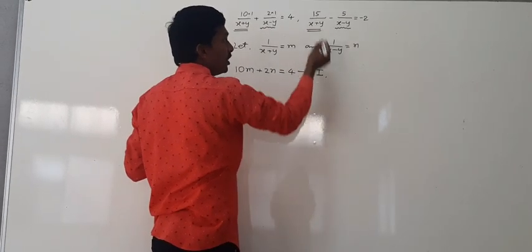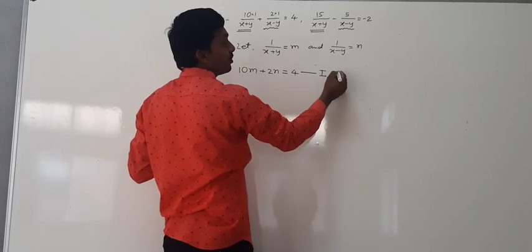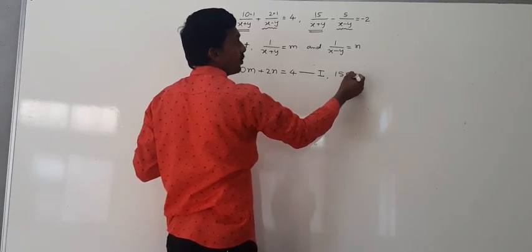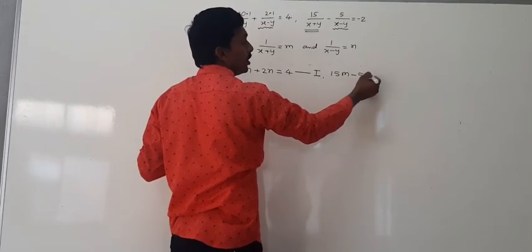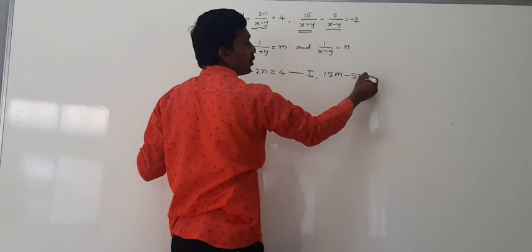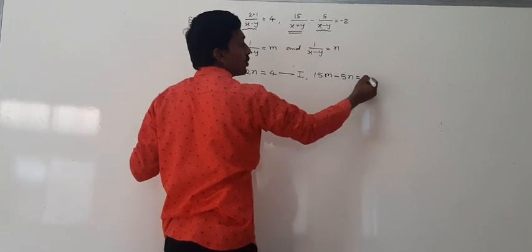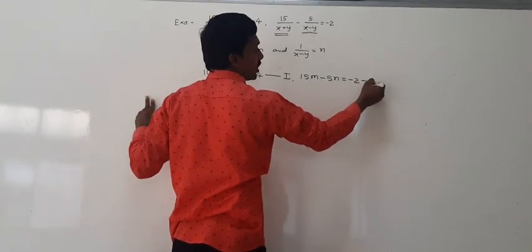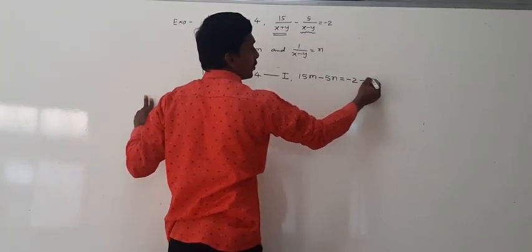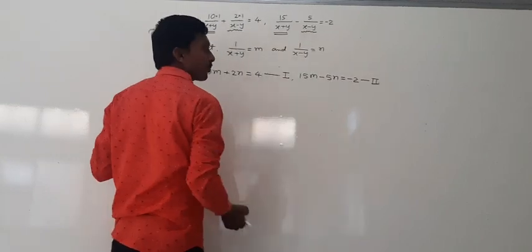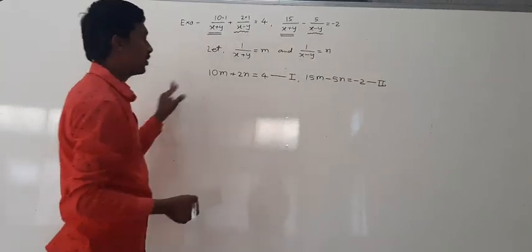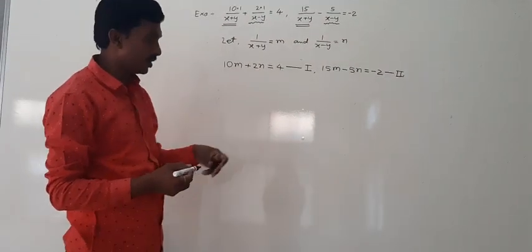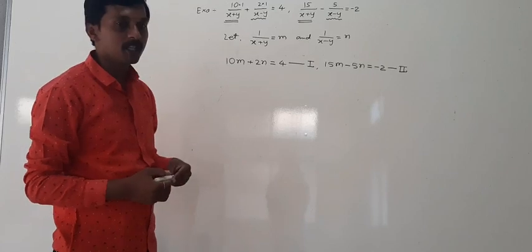The second equation becomes 15m minus 5n is equal to minus 2. This is the second linear equation in two variables. We now have a pair of linear equations in two variables m and n.